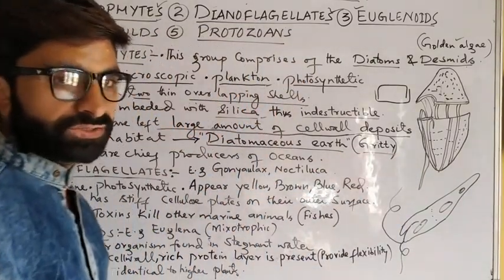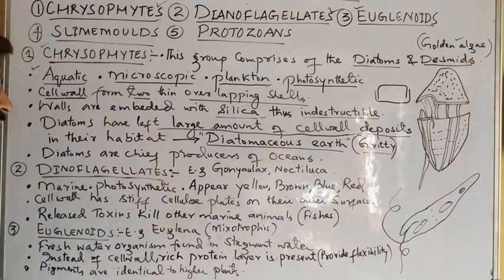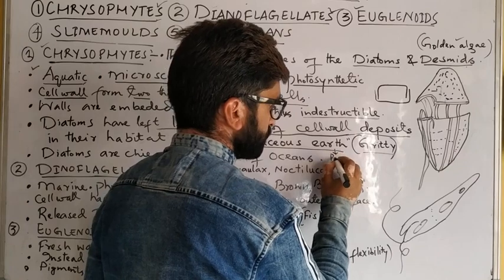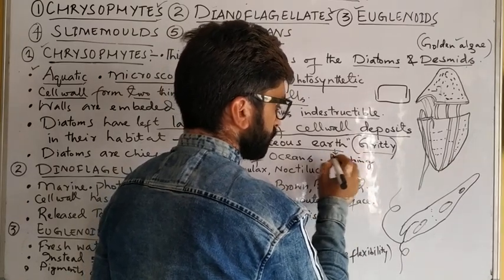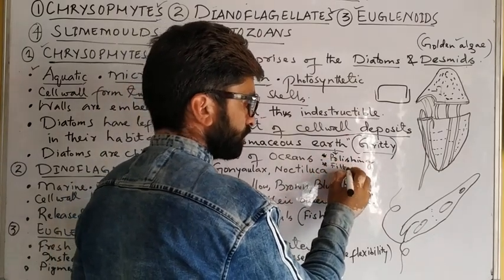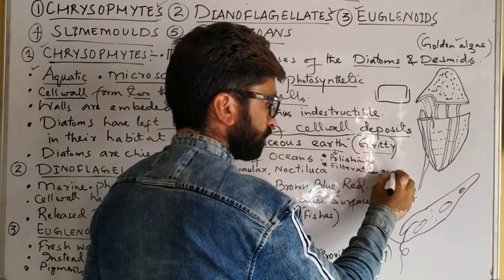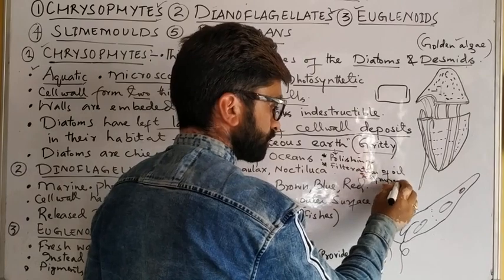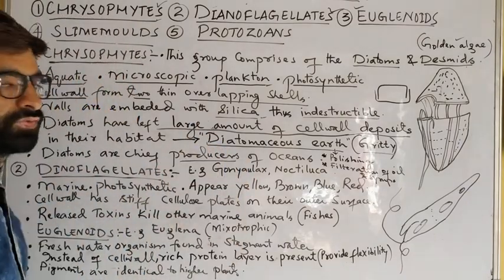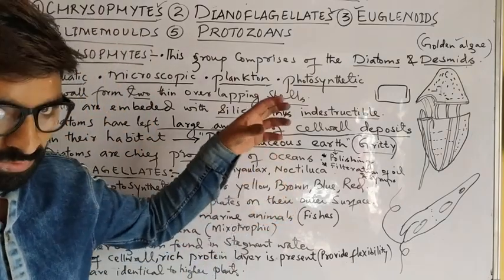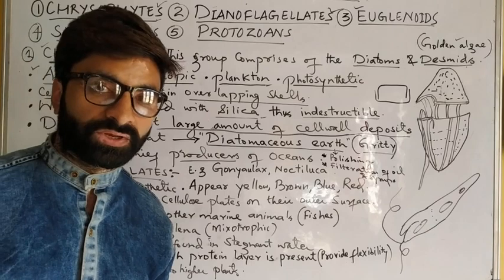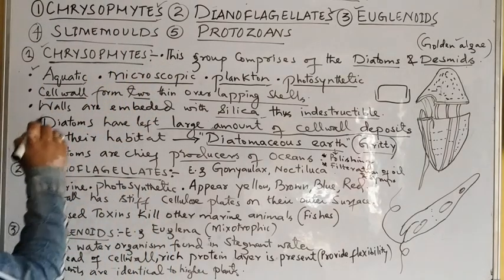The nature of diatomaceous earth is gritty. Its uses include polishing and the filtration of oils and syrups. Diatoms are also the chief producers of the oceans — in salty ocean water where diatoms grow, they serve as chief producers.